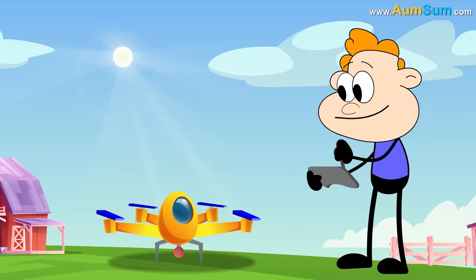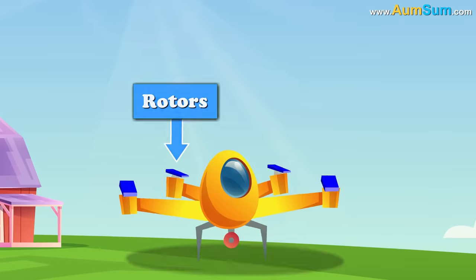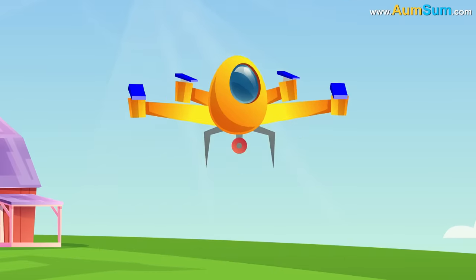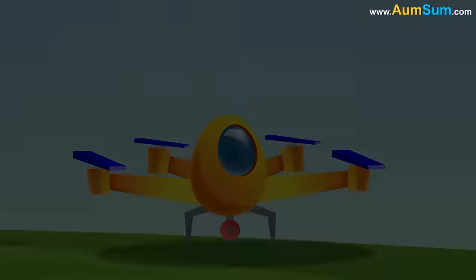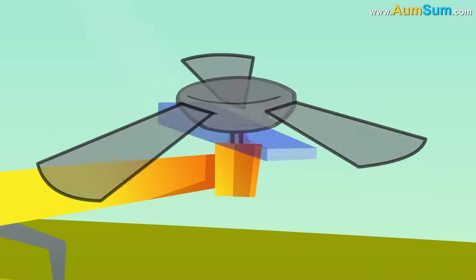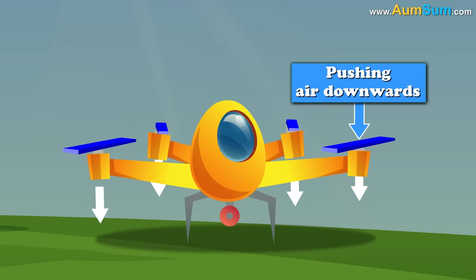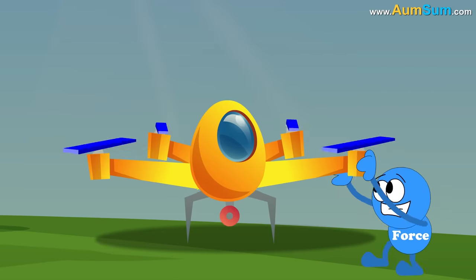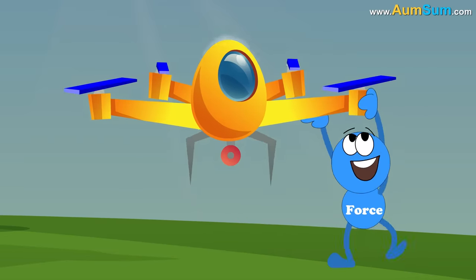Drones commonly make use of rotors to fly. Just like a fan, when the blades of a rotor start spinning, they start pushing air downwards. While in response to this, the air starts pushing up on the rotor.